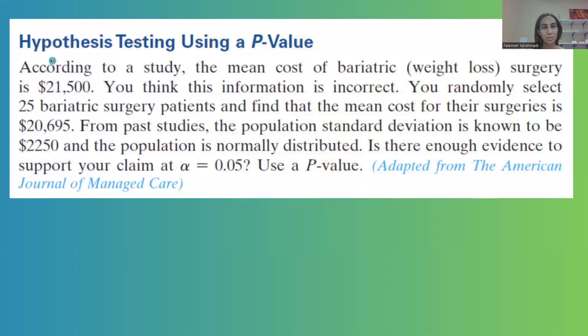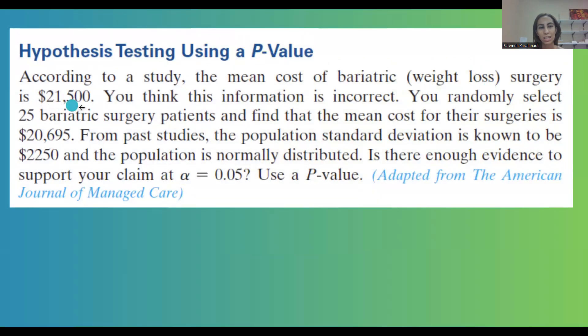Hypothesis testing using a p-value. According to a study, the mean cost of bariatric or weight loss surgery is about $21,500. You think this information is incorrect. As a statistician, you randomly select 25 bariatric surgery patients and find that the mean cost, the average cost for their surgery is $20,695.